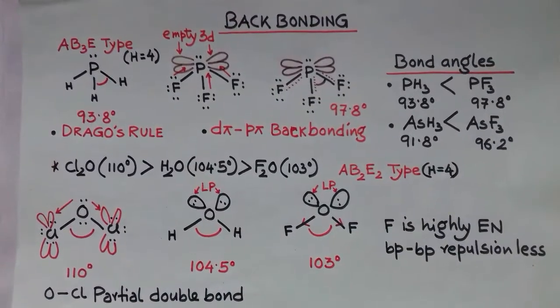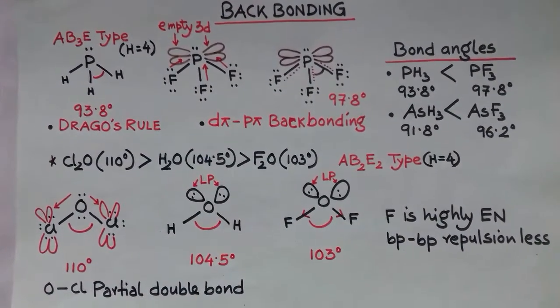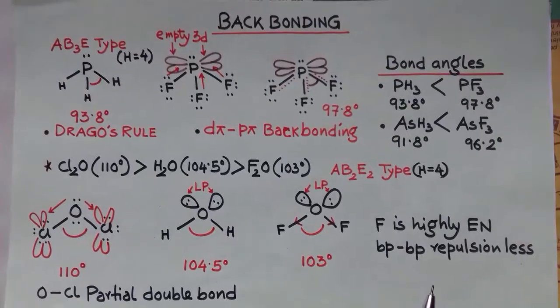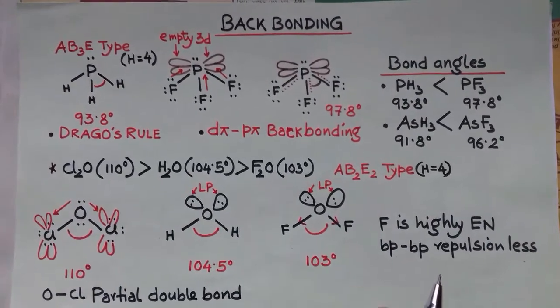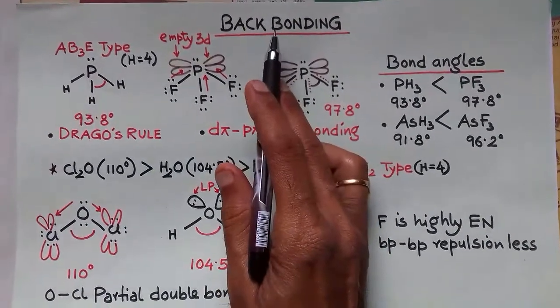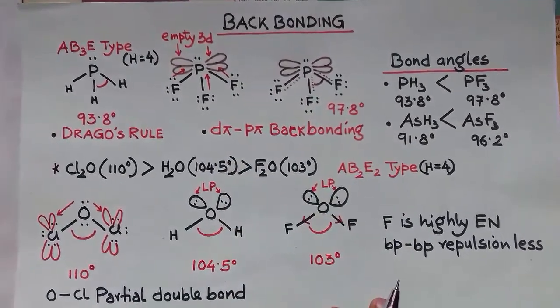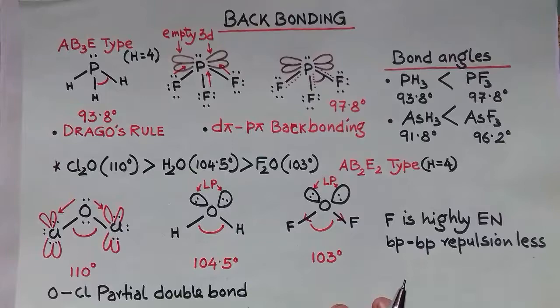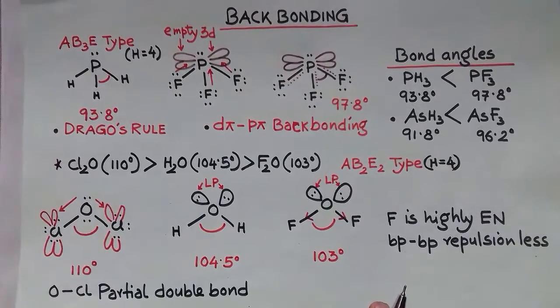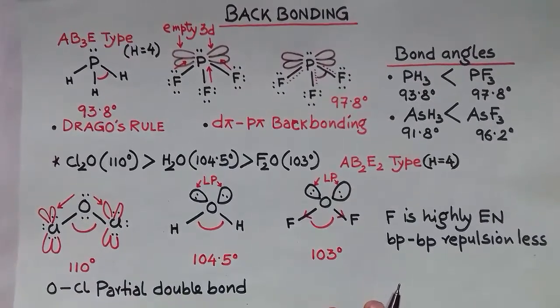Today we will discuss backbonding and bond angle calculation. Backbonding means lone pairs from central atom or non-central atom are donated towards vacant or empty d or p orbitals of another atom attached by covalent bond.